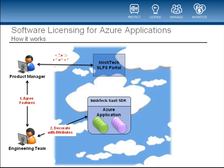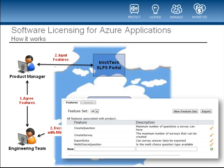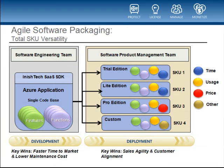At the same time, the product manager can start to enter feature information into the SLP online portal. The SLP online portal is the web service that the ISV uses to manage their products, SKUs, and licenses. A snapshot of the portal UI is provided here for context. When the feature information has been entered, the product manager can start to define license SKUs — these are the distinct packages or editions of the software based on feature sets, entitlements, and limitations, created within the portal as templates from which license keys are issued. This illustrates the central importance of agile software packaging: the ability to define license SKUs dynamically, independent of the product development process.